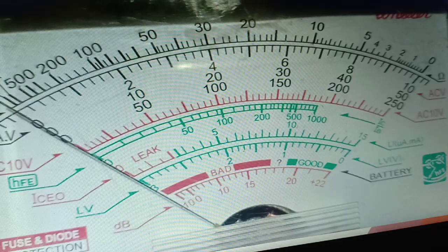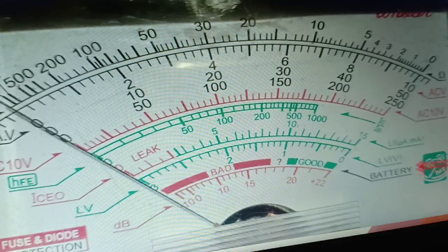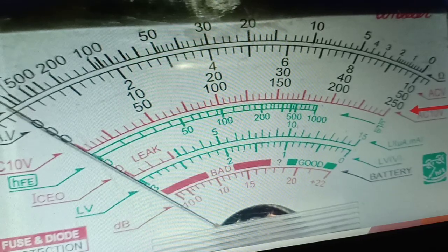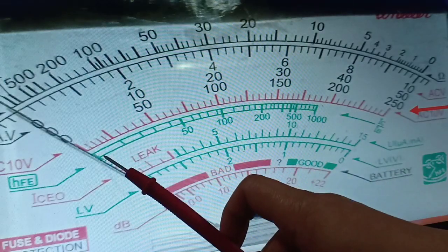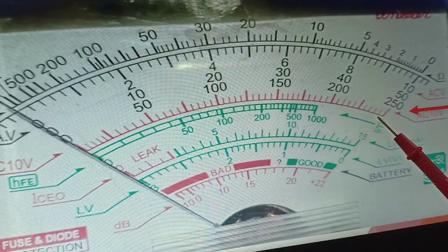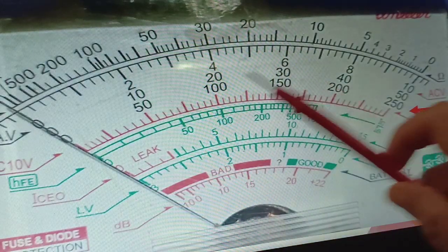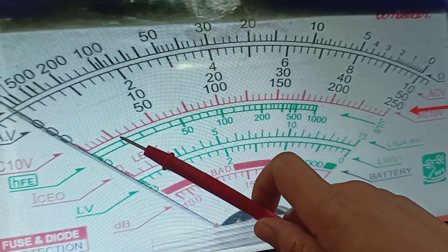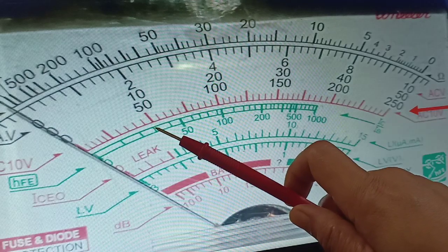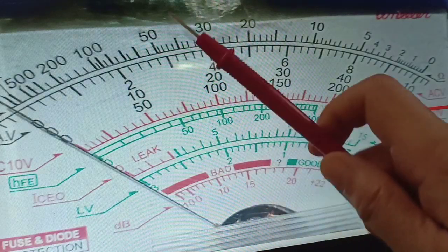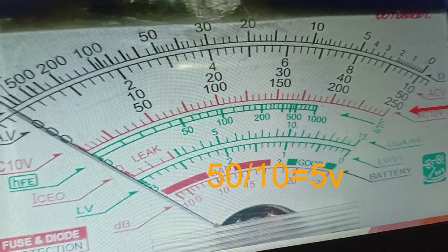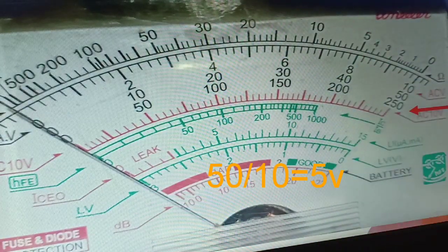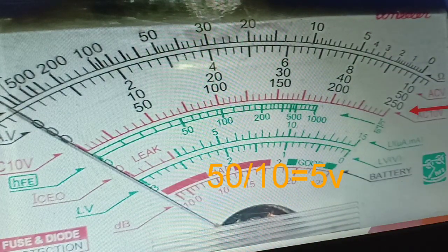Now, what if we set the multi-tester into 250 volts? If that is 250 volts, we can refer into the curve here, the red curve. Let us count again the graduation. There is 1, 2, 3, 4, 5, 6, 7, 8, 9, and 10. 50 divided by 10 is equal to 5. Therefore, each graduation is equal to 5.